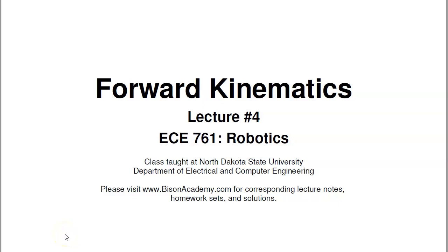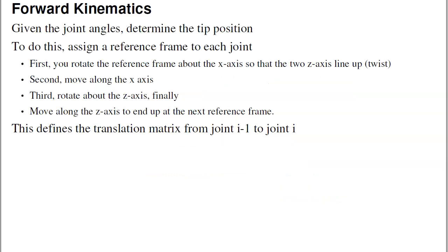Welcome to ECE 761 Robotics, Lecture Number 4: Forward Kinematics. Forward Kinematics is how to go from the base to the tip of the robot to find out where the tip is.